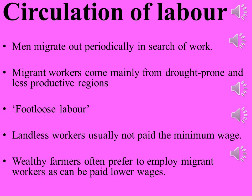Many of these workers belong to drought-prone places — meaning places with inadequacy of water, dry land kind of places — or less productive areas. They usually go to work in the fields of Punjab and Haryana, or sometimes in the kilns of UP where bricks are made, and sometimes in the construction sites of New Delhi or Bangalore.